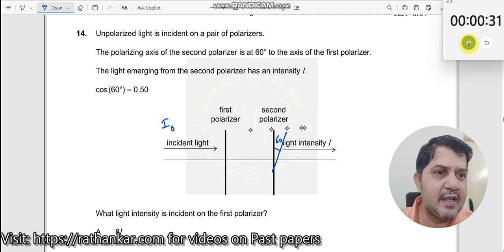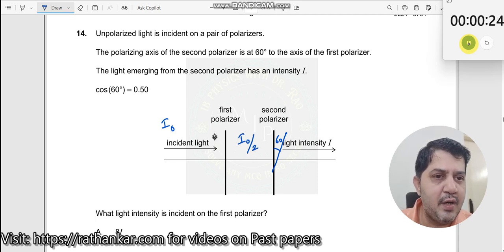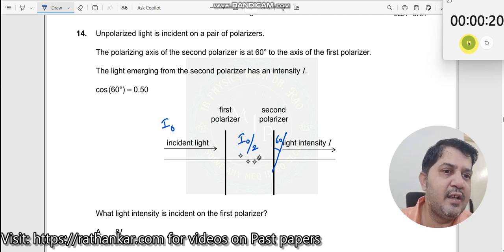Usually they will give you i0 and ask you i. Now it is a reverse case. How do I do? So if this is i0, this should definitely be i0 by 2, irrespective of how the polarizer axis has been aligned. It is always i0 by 2.